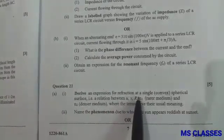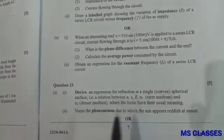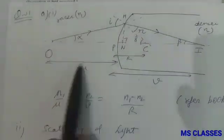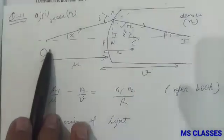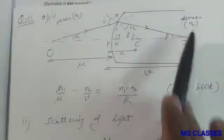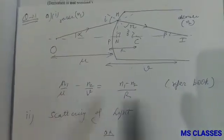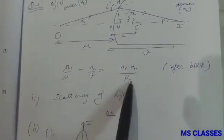Second, they have asked to write the relation for the resonating frequency. So from here you can get the resonating frequency 1 by 2 pi root LC. Question 21, first part: Derive the expression for the refraction at a single spherical surface. So this is the diagram where the object is kept in rarer medium and the image is formed in denser medium, and after solving which you can refer from your book you get this expression.